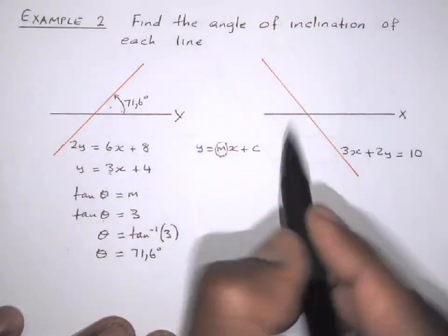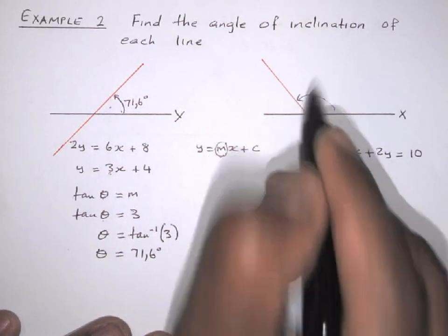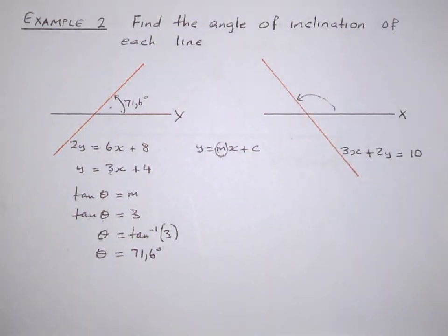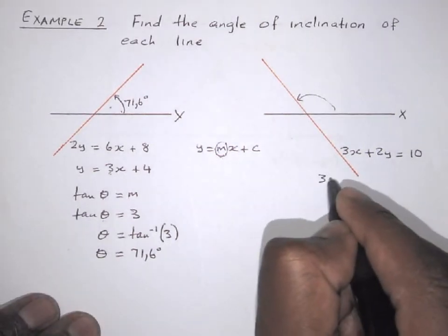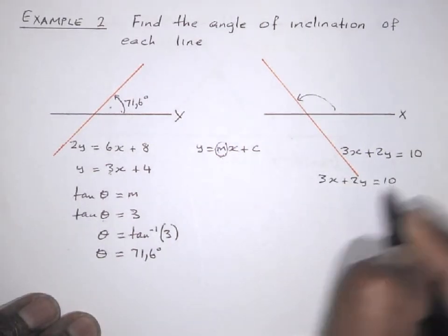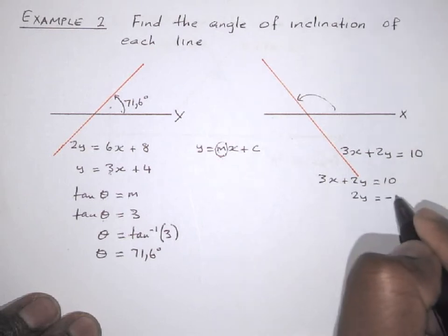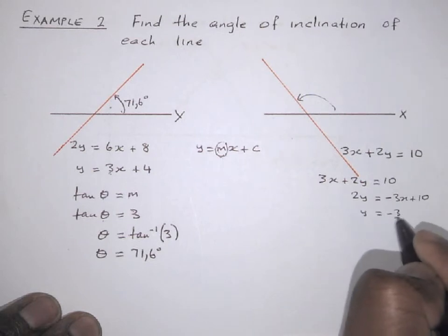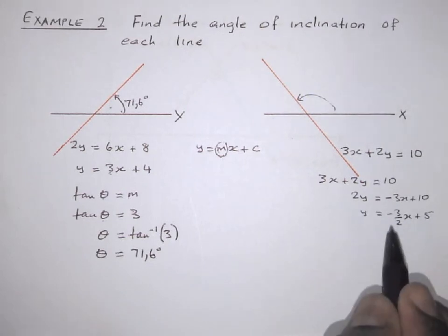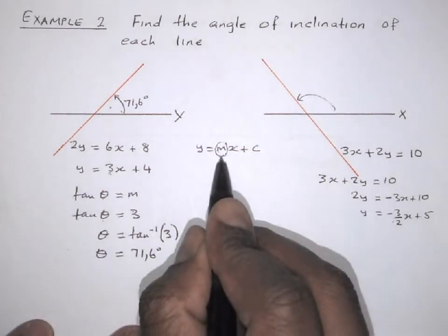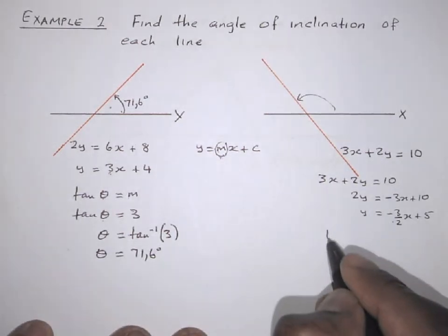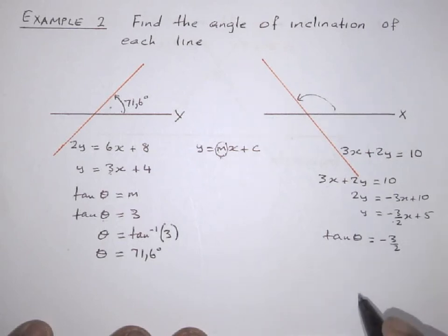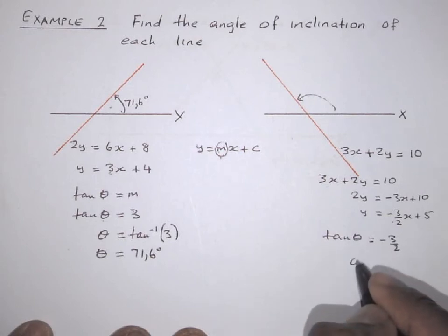Now let's look at this one. Remember the angle we're looking for is the angle above the x-axis. The equation 3x plus 2y equals 10 is not in standard form. Let's write it in standard form: 2y equals minus 3x plus 10, then divide by 2 to get y equals minus 3 over 2 times x plus 5. The gradient is minus 3 over 2. To find theta, we set tan theta equals minus 3 over 2, and we use arctan.